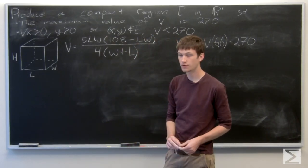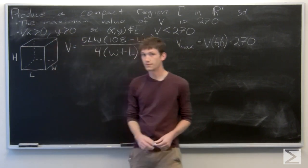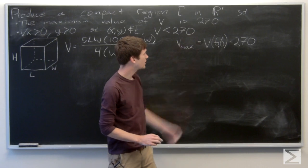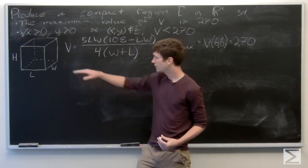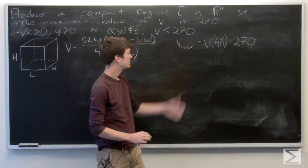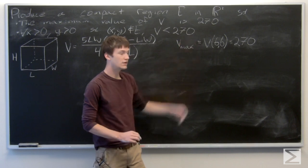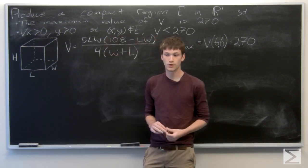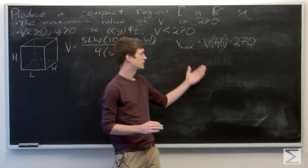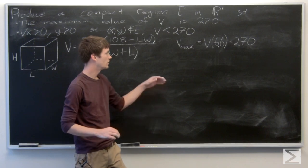In this problem, we're asked to produce a compact region E in R2 such that the maximum value of V on E is 270. The reason why we have 270 is because in a previous problem, we had already found that the max value, based off of just the general idea of our box, was 270.